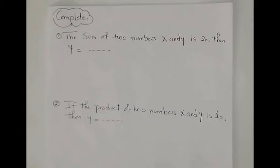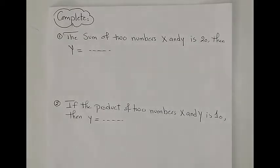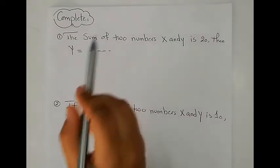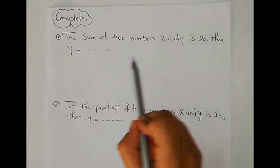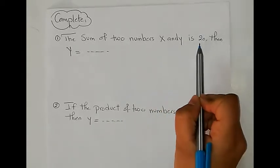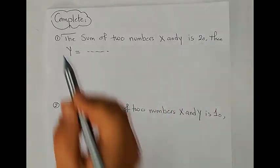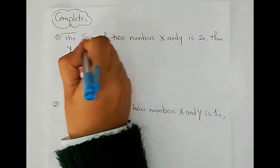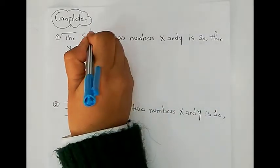Now let's answer some questions with two variables. Question one: the sum of two numbers X and Y is 20. Sum means plus, so we write X plus Y equals 20.